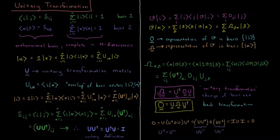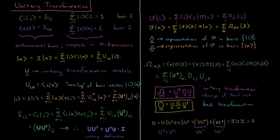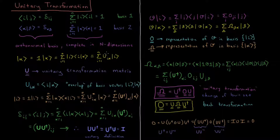Let's start off by defining the ket vector alpha, which is equal to the identity operator times alpha — just 1 times itself. We substitute 1 with the resolution of the identity, giving us a sum from I equals 1 to N of ket vector I times the overlap of basis vector I and basis vector alpha. This equals the sum from I equals 1 to N of the coefficient u_iα times the ket vector I. So how we go from basis set alpha to basis set I is determined by these elements u_iα, which are the overlap of basis vector I and basis vector alpha. This must hold for all N alphas and all N i's, giving us an N by N matrix.